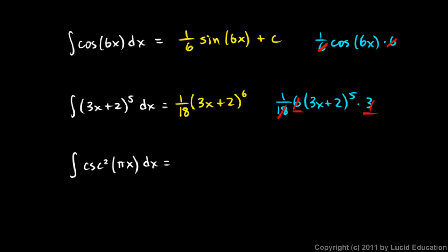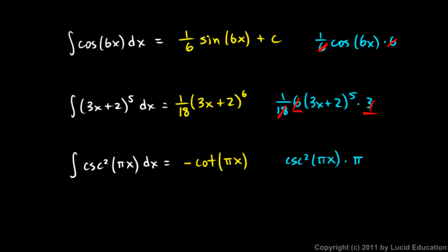The next one: the integral of csc²(πx) dx. The derivative of cotangent is negative cosecant squared, so the derivative of negative cotangent is cosecant squared. Let's try negative cotangent of πx. When we differentiate that, we get csc²(πx) times π from the chain rule — an extra factor of π. So to compensate, we divide by π, giving the answer as (-1/π)cot(πx) + c.